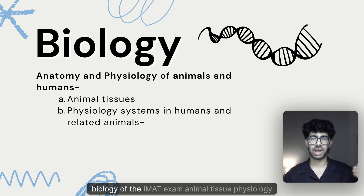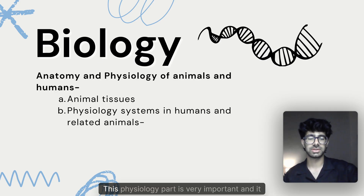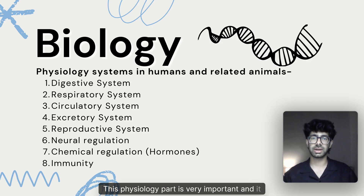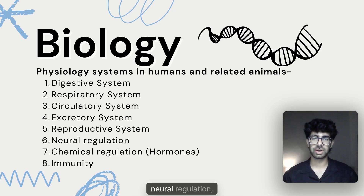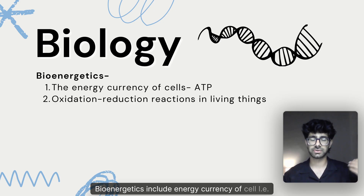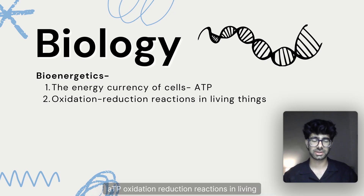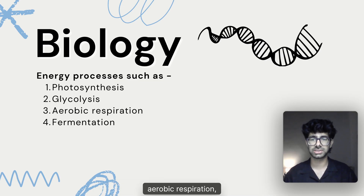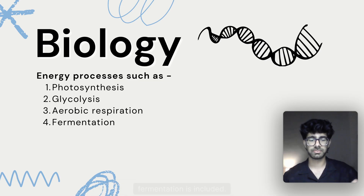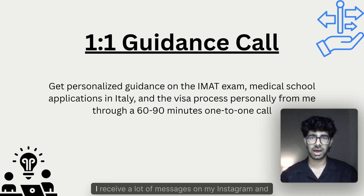Anatomy and physiology of animals and humans is another very important topic. It includes animal tissue, physiology systems in humans and related animals — specifically the digestive system, respiratory system, circulatory system, excretory system, reproductive system, neural regulation, chemical regulation, and immunity. Bioenergetics covers the energy currency of the cell — ATP — oxidation-reduction reactions in living things, and energy processes such as photosynthesis, glycolysis, aerobic respiration, and fermentation.